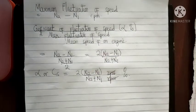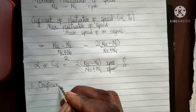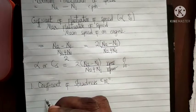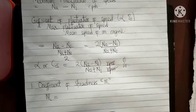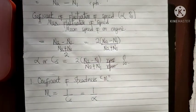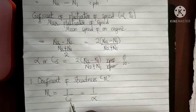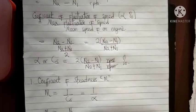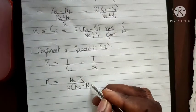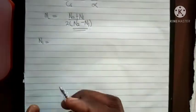When an engine is moving at a steady rate and not fluctuating, we have what is known as the coefficient of steadiness, denoted by m. The coefficient of steadiness is the reciprocal of the coefficient of fluctuation of speed: m = 1/Cs or 1/α. Therefore, the formula for coefficient of steadiness is m = (N2 + N1) / [2(N2 − N1)].